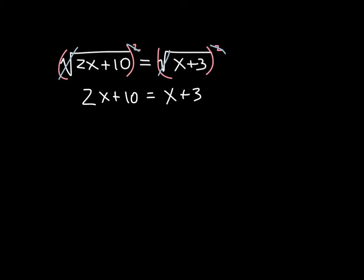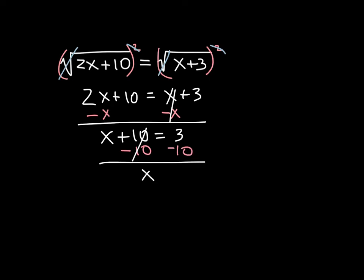At this point we need to get all the x terms on the same side, so we are going to subtract this x here from both sides. 2x minus 1x is 1x, or just x, plus 10 equals 3. And lastly, we're going to subtract 10 from both sides of the equal sign. And we get x equals negative 7.